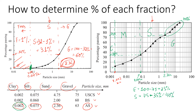Looking at the boundary with clay at 0.002 millimeters, that point gives approximately 12 percent. So silt goes from 35 percent down to 12 percent, giving 23 percent silt. The remaining 12 percent is clay, since we have no information beyond that point.